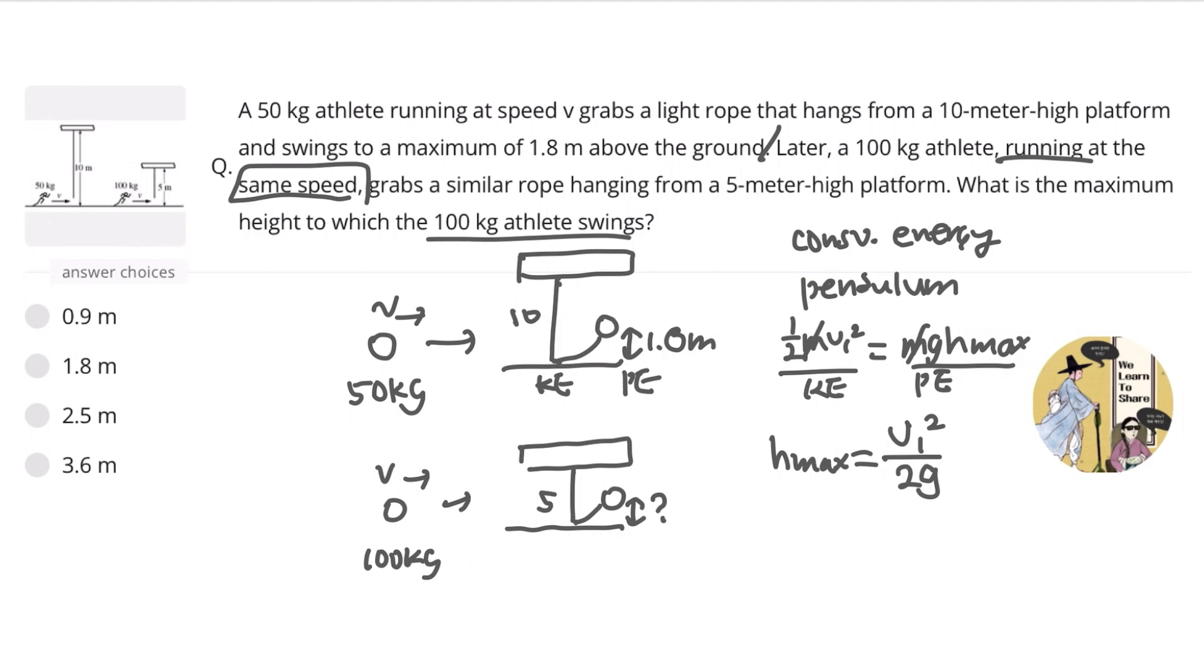But in this case, as we can see from the question, the 100 kg athlete runs at the same speed as the 50 kg athlete. So therefore, we can conclude that the maximum height is independent of the mass and the length of the rope, because the only thing that could affect h_max is the same.